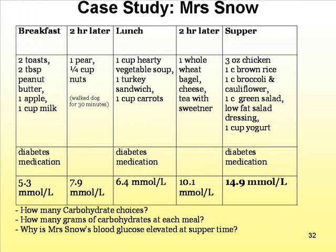Let's practice with Mrs. Snow. She wakes up in the morning, checks her sugar — it's 5.3 — takes her diabetes medication, and chooses to have two slices of toast with peanut butter, an apple, and a cup of milk. How many carbohydrate choices for breakfast? One slice of bread is one carbohydrate choice, so two slices is two choices — 30 grams. Her peanut butter is protein, so it doesn't count. Her apple is one carbohydrate choice, and her cup of milk is one carbohydrate choice. So she's having four carbohydrate choices for breakfast, which is four times 15 equals 60 grams of carbohydrates.